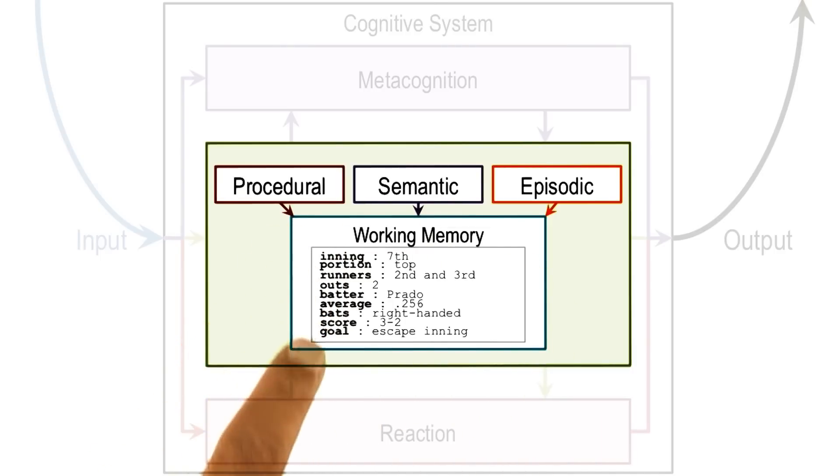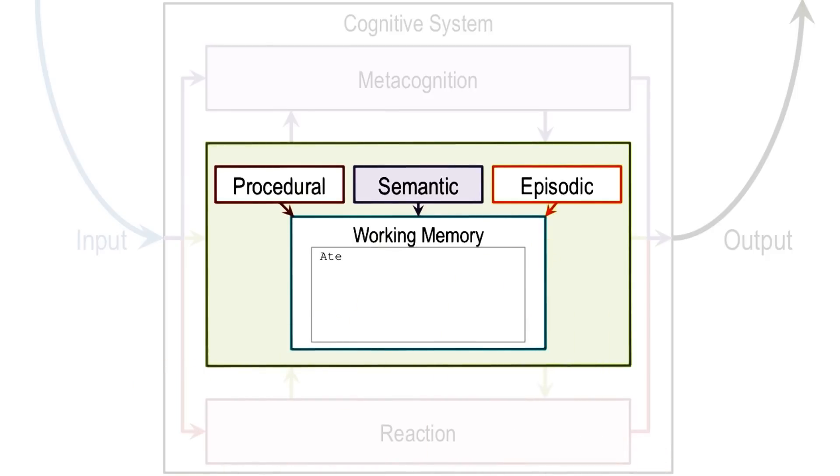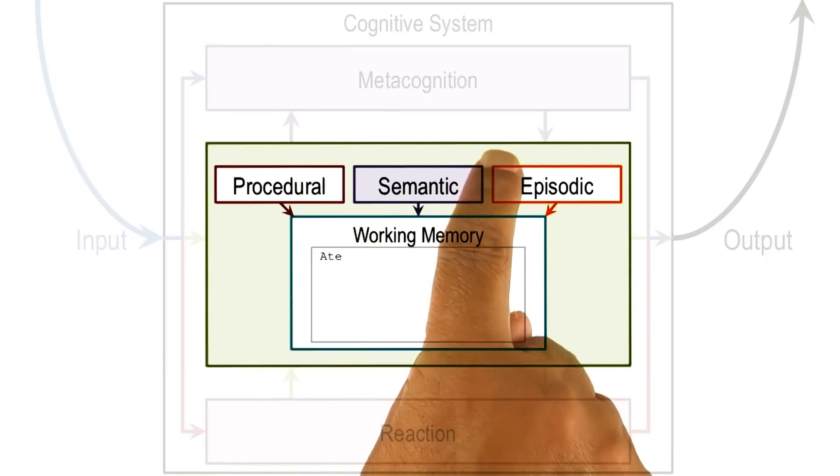You can see this is really a frame. Here are the slots, here are the values for the slots. We can think of these frames as capturing conceptual knowledge that is stored in the semantic memory.